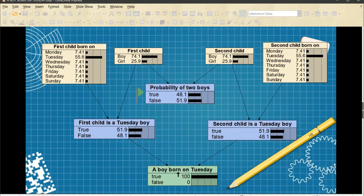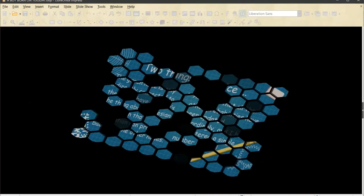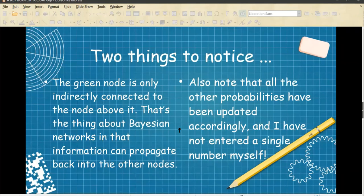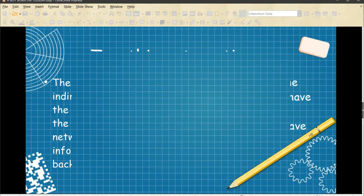Two things to note. The green node is only indirectly connected to the node above it. That's the thing about Bayesian networks, in that information can propagate backward into the other nodes. And a final reminder. Notice that all the probabilities have been updated accordingly, but I haven't done any calculations myself. Netica, the Bayesian calculator, has done all that for me.